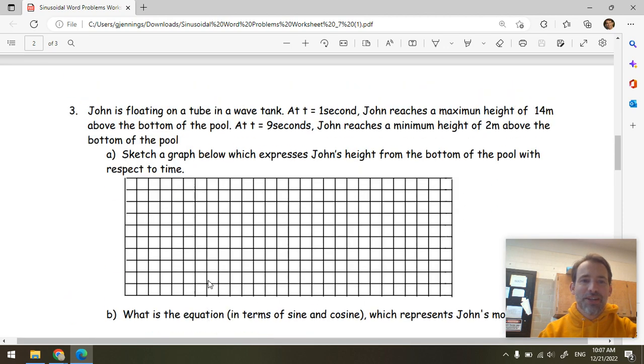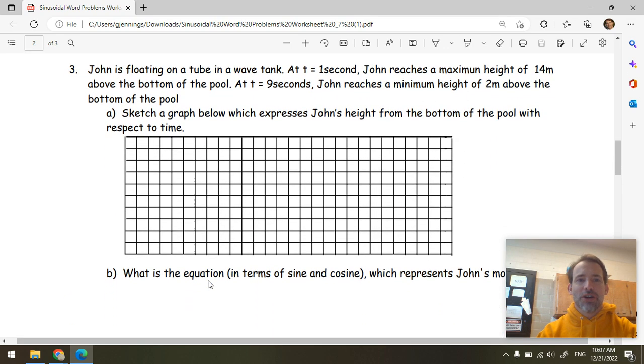All right, so let's zoom in on question three. John is floating in a wave tank. Nice, John. At time t = 1 second, he reaches a maximum of 14 meters above the bottom of the pool. At time equals 9, he reaches a minimum height of 2 meters.